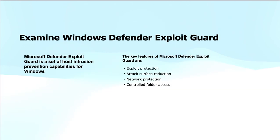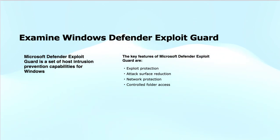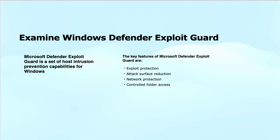Next is Windows Defender Exploit Guard. This is a set of host intrusion prevention capabilities designed to protect Windows devices from various types of exploits and attacks. It provides advanced protection by reducing the attack surface and preventing exploits from running even if they target unpatched vulnerabilities. Key features include: exploit protection, attack surface reduction, network protection — which blocks potentially harmful network traffic and prevents malicious web content from reaching the device — and controlled folder access, which prevents unauthorized access to files and folders and protects critical data from ransomware and other malicious activities.